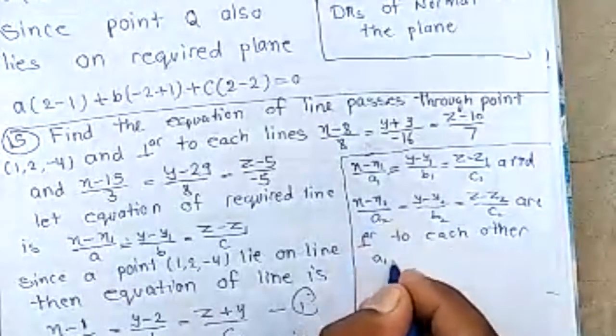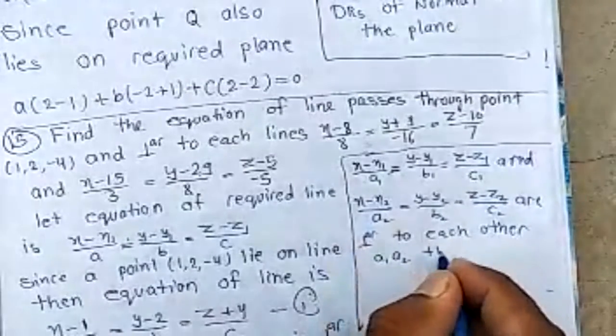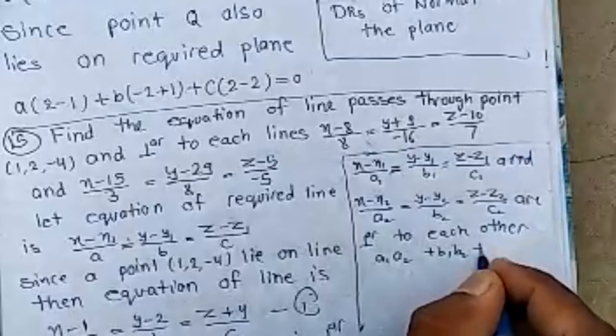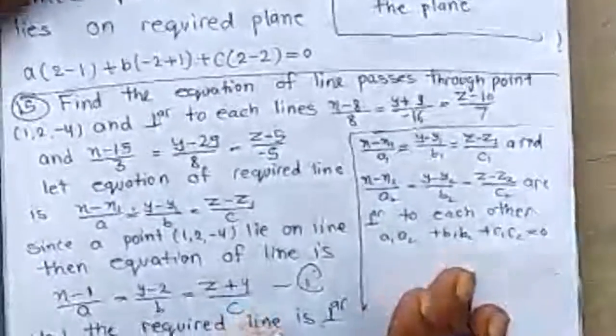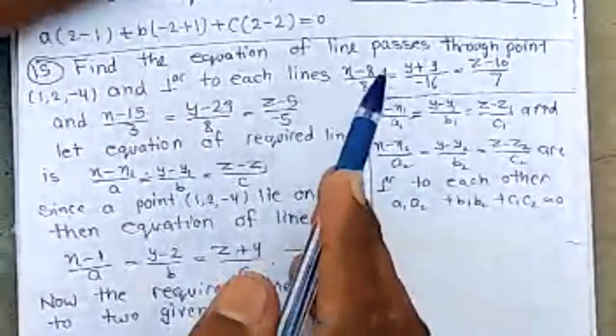then we have A1 times A2 plus B1 times B2 plus C1 times C2 equals 0.